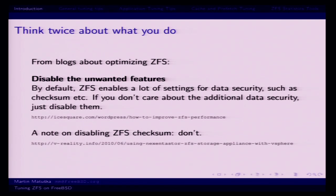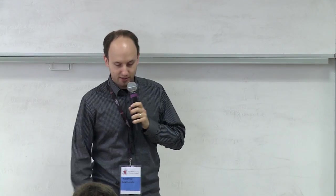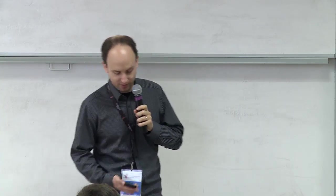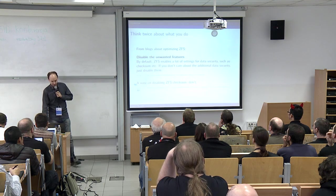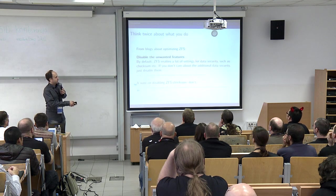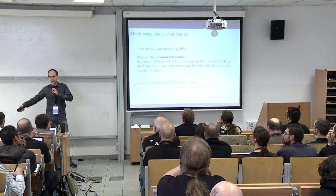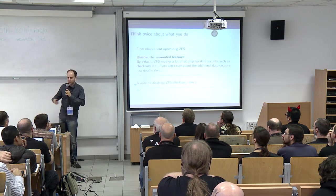Always think twice about what you do. I have quotes here from two blogs on the internet. The first is by some guy writing about speeding up ZFS on FreeBSD who, among other things, has a section called 'disabled unwanted features.' He says if you don't need checksums, disable them — and in his actual optimization strings, there is a command to disable ZFS checksum across the whole system, while he's using a mirror or RAID-Z dataset.